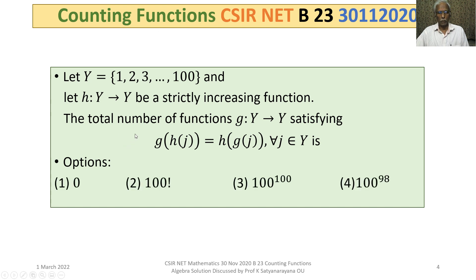The four options given are: Option 1: 0; Option 2: 100 factorial; Option 3: 100 to the power 100; Option 4: 100 to the power 98.